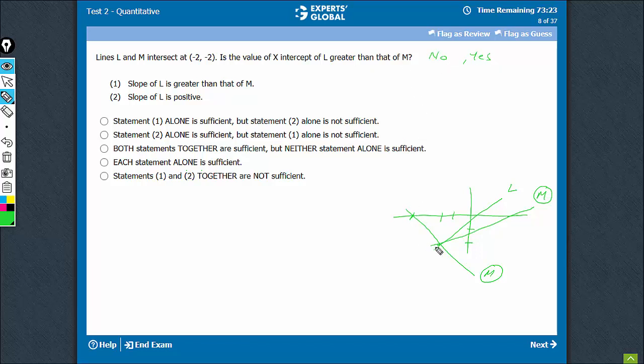If L were also a declining line with a higher slope, that means a lesser negative slope, something like this, then yes, L would have an even more negative x-intercept. So even in this case, the answer would be no.